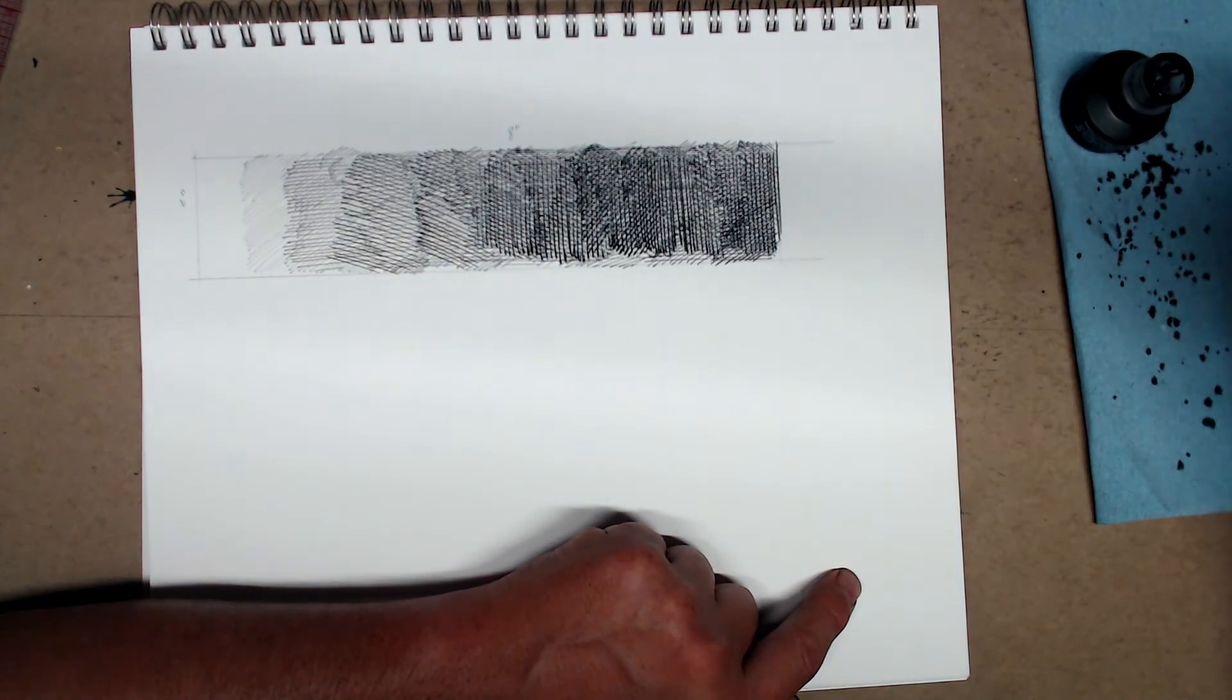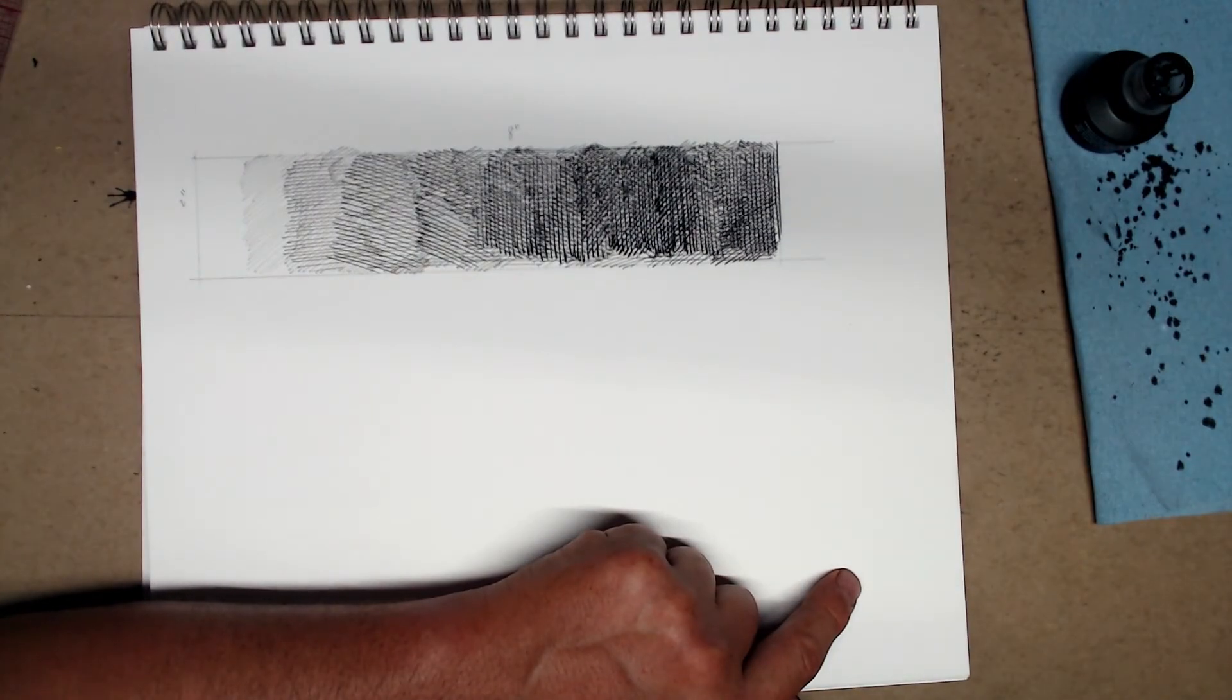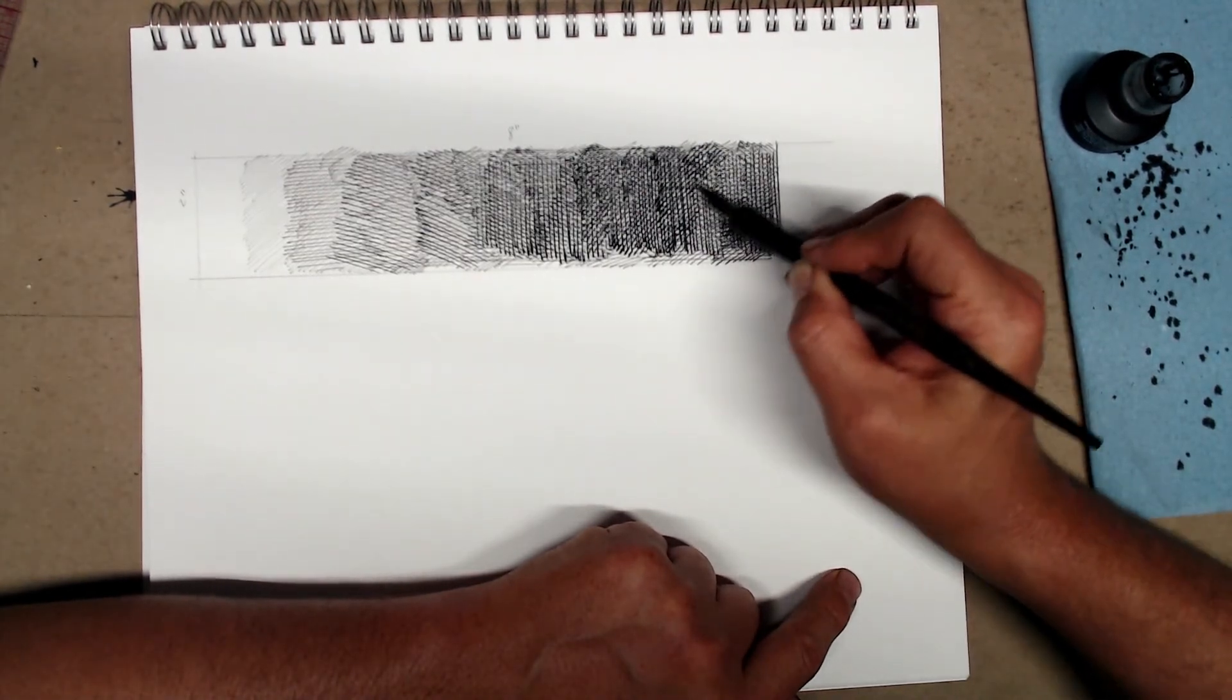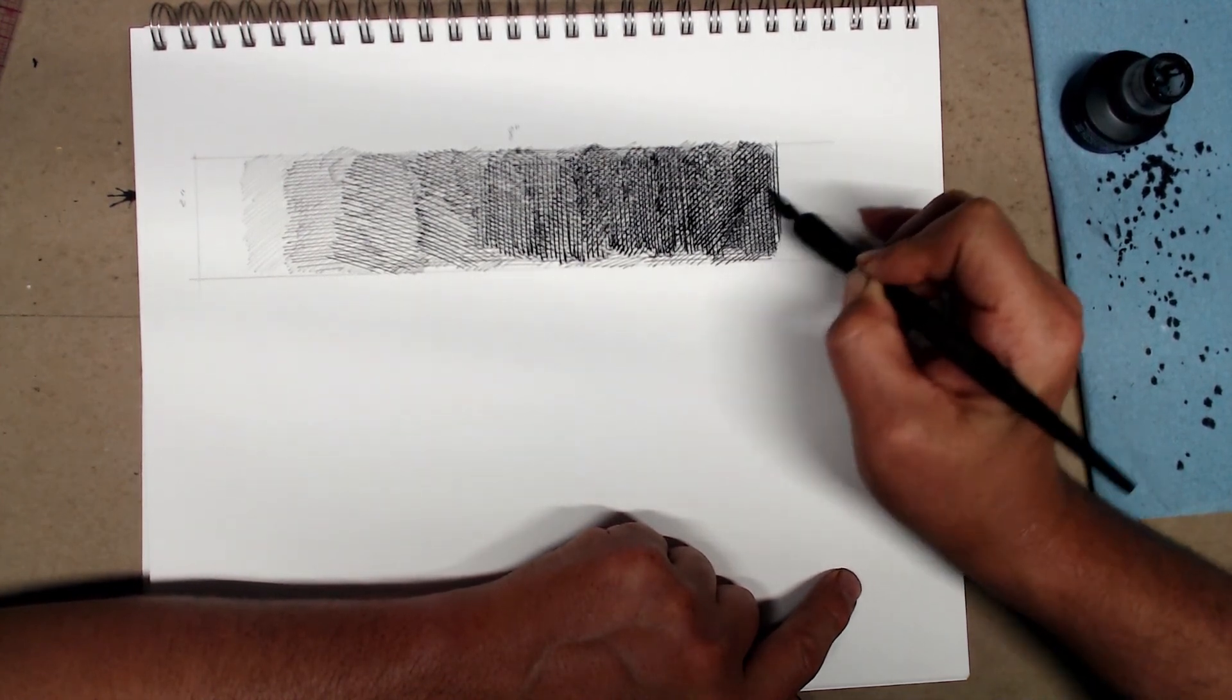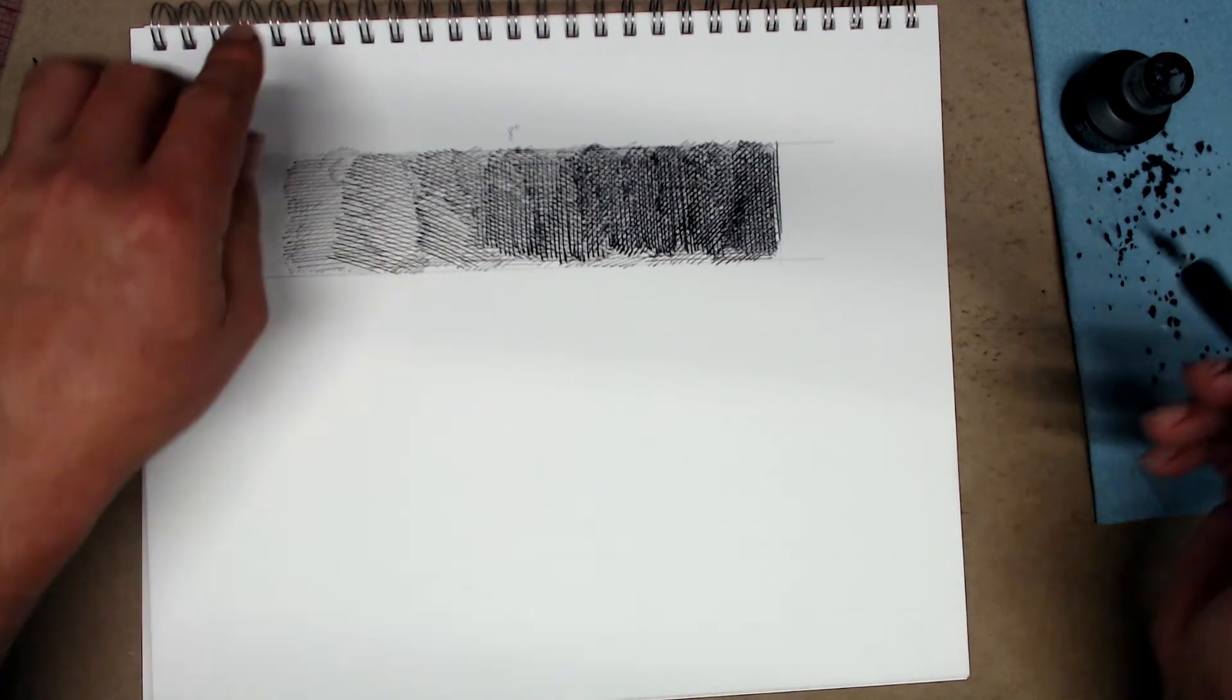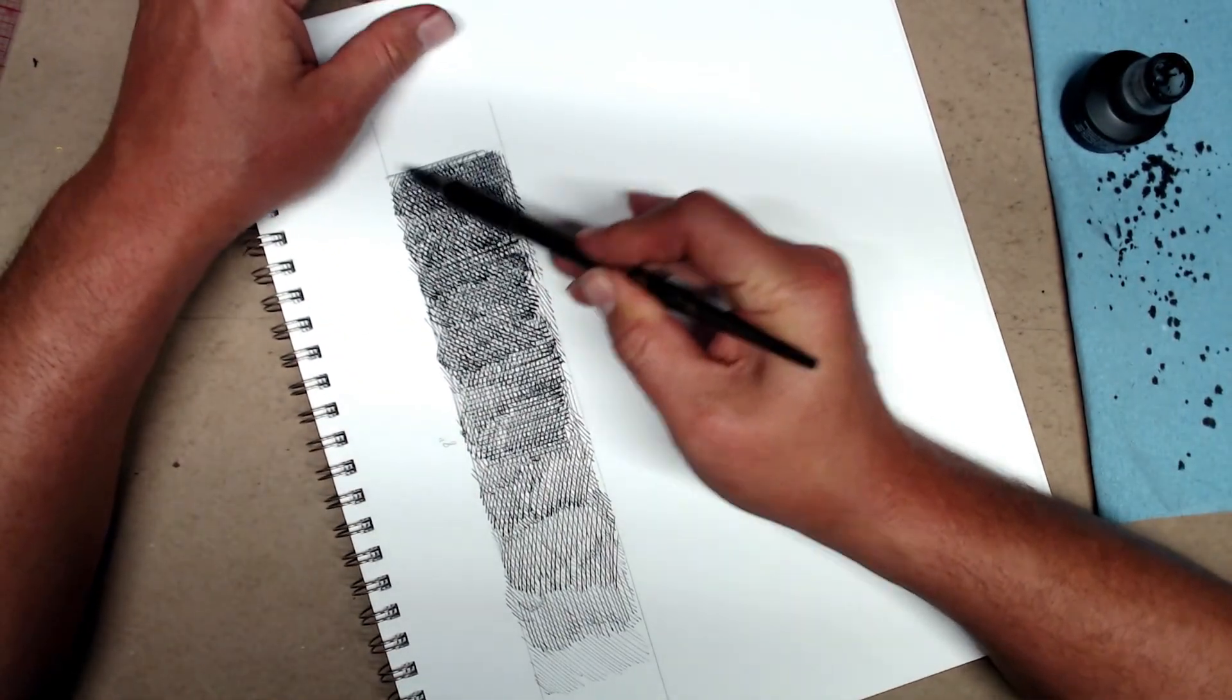I'm really starting to press down quite a lot. So, not only is the value being built up by layers of hatch, but also with the line quality. Okay. Let's do one more direction. Let's start going a little more this way. So, for this, we're going to flip our paper and right about here, put in our last layer of hatch.